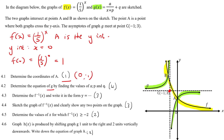Now, determine the equation of g by finding the values of a, p, and q. We know that a hyperbola — they could say x minus p, or they can say x plus p. That makes no difference to what the final equation is going to look like, but it is going to change the value of what p would be.